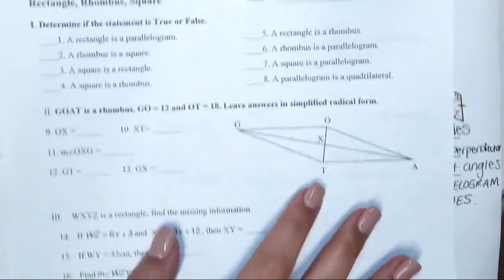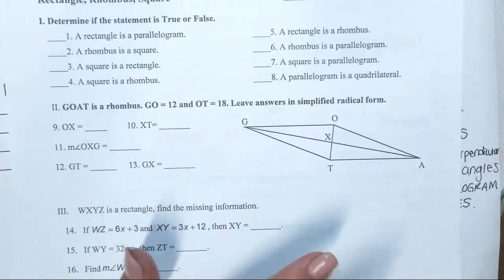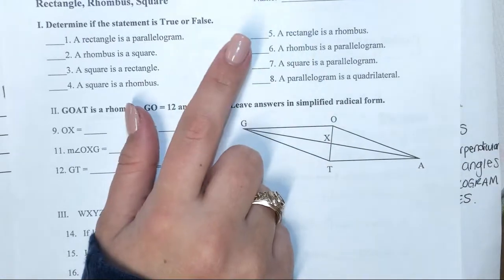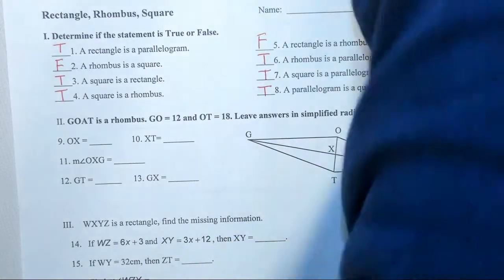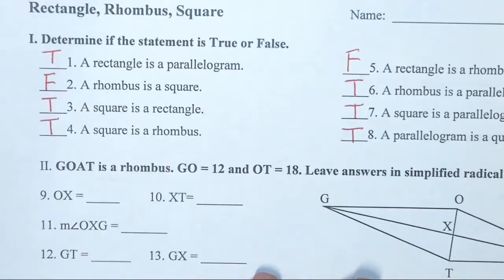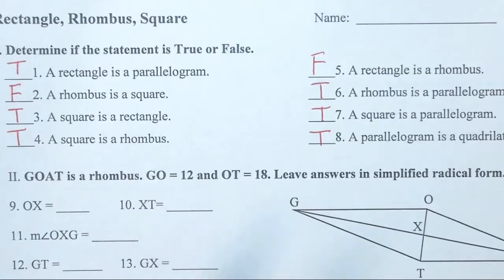I want you to take about two minutes and go through one through eight and tell me true or false. We'll go over that in about two minutes. Here are your answers for one through eight — take a minute and check. If you got one wrong and you're not sure why it's true or false, you need to ask and we will discuss it as a class.